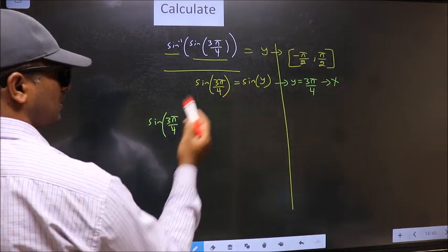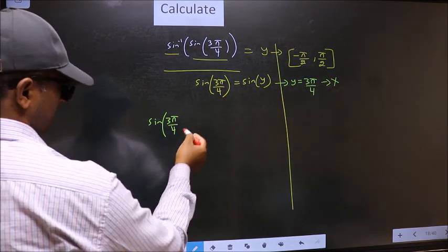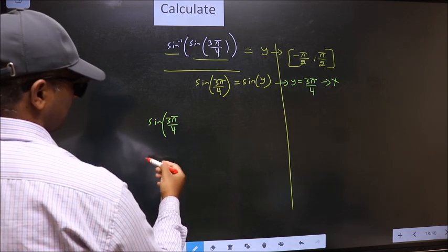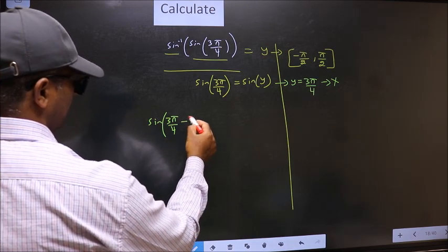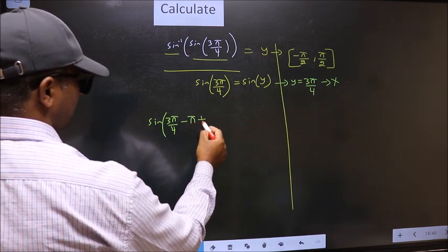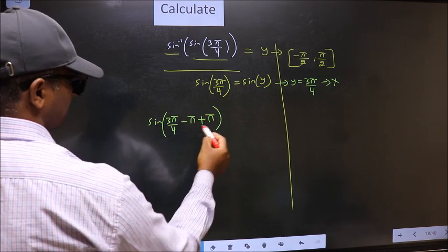3π by 4 does not lie in that interval. So we should decrease it. And to decrease I subtract π. Whatever we are subtracting we should also add the same thing.